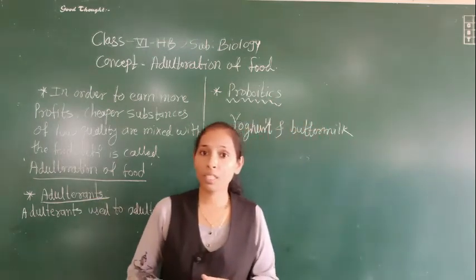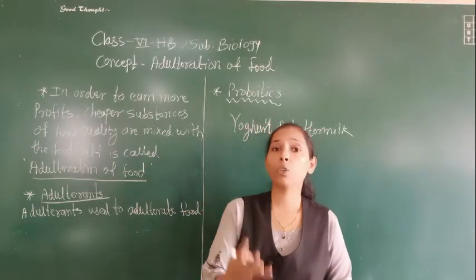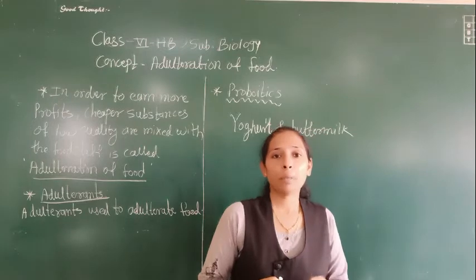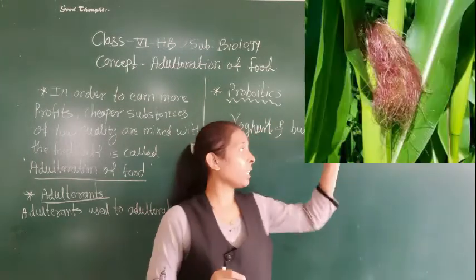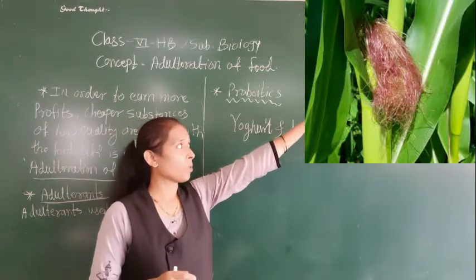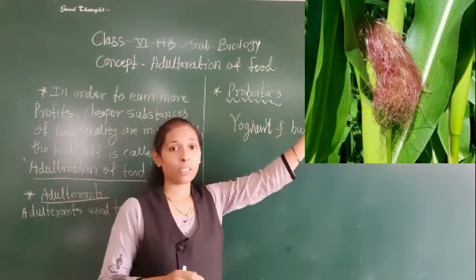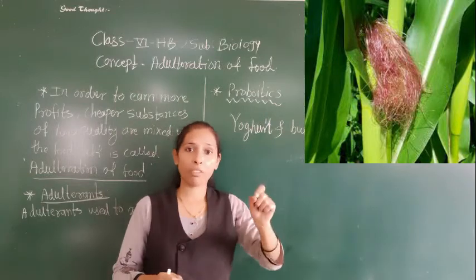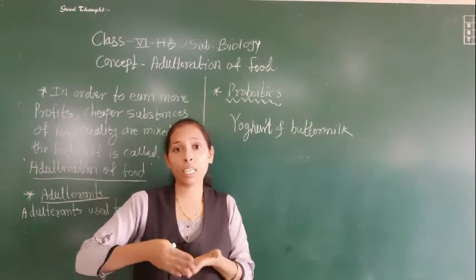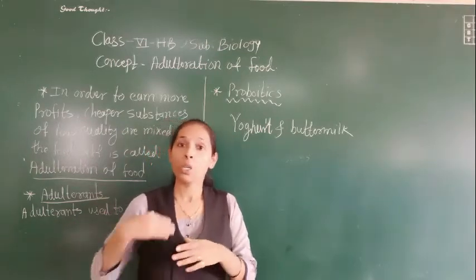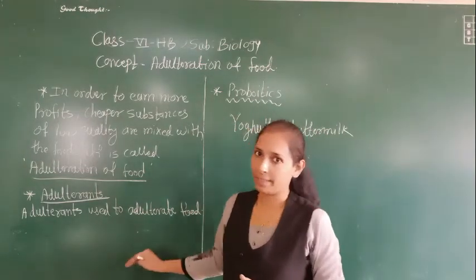Also, as we know saffron is very costly. To increase its amount and get more profit, sometimes the hairs of the maize are used. If you have seen maize, you can see that it has hair-like strands. A person gives color to those maize hairs similar to saffron and then mixes them into the saffron, so we cannot tell exactly what is saffron and what is maize. That is adulteration of food, and the maize hairs are the adulterant.